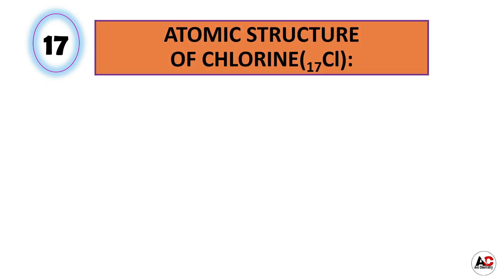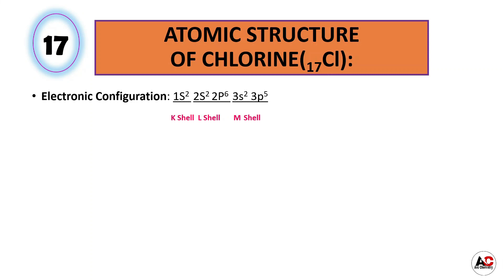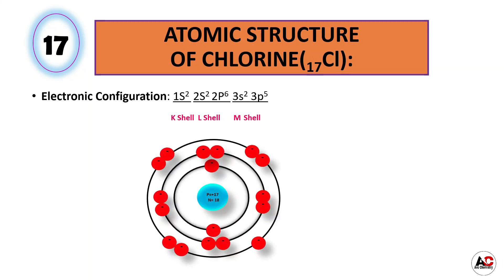Now the next element is chlorine. The atomic number of chlorine is 17, meaning it has a total of 17 electrons. So the electronic configuration of chlorine is 1s2, 2s2, 2p6, 3s2, and 3p5. With the help of this electronic configuration, the atomic structure of chlorine will be like this. It has 17 protons and 18 neutrons inside the nucleus and 17 electrons around the nucleus: 2 are in the K shell, 8 are in the L shell, and 7 are in the M shell.